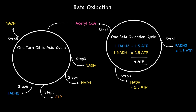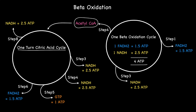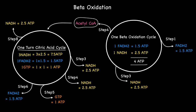If we now apply the ATP exchange rates for each of these molecules, we can calculate the total number of ATPs for each acetyl-CoA produced. In total, one acetyl-CoA entering into the citric acid cycle leads to the production of three NADHs giving 7.5 ATPs, one FADH2 giving 1.5 ATPs, and one GTP giving 1 ATP. Adding all these up gives a total of 10 ATPs per turn of the citric acid cycle, or put another way, every acetyl-CoA produced by beta-oxidation equates to 10 ATPs.